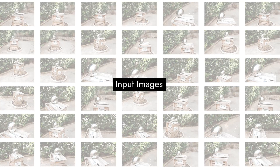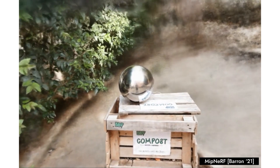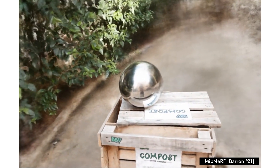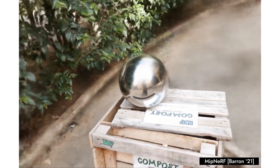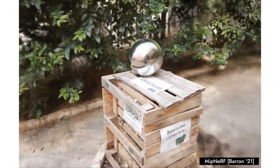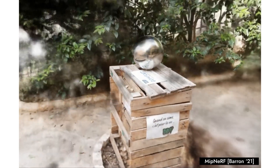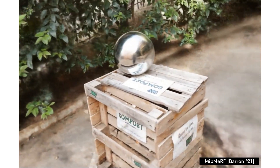Given a set of images and the help of neural rendering, many algorithms can create immersive experiences in 3D, allowing the users to move the camera wherever they want, far away from the input images. But still, view-dependent effects such as reflections pose a substantial challenge.